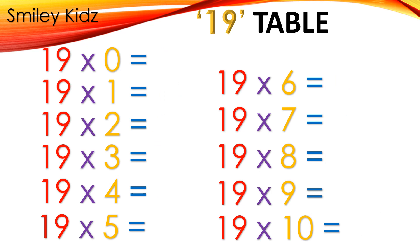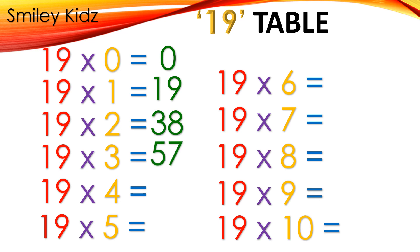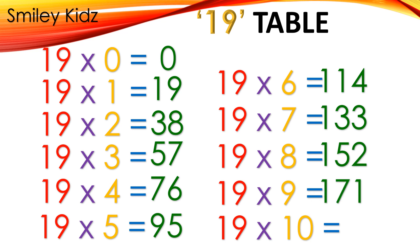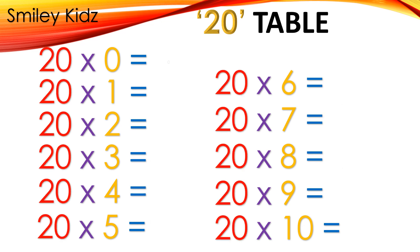Table 19: 19×0=0, 19×1=19, 19×2=38, 19×3=57, 19×4=76, 19×5=95, 19×6=114, 19×7=133, 19×8=152, 19×9=171, 19×10=190.